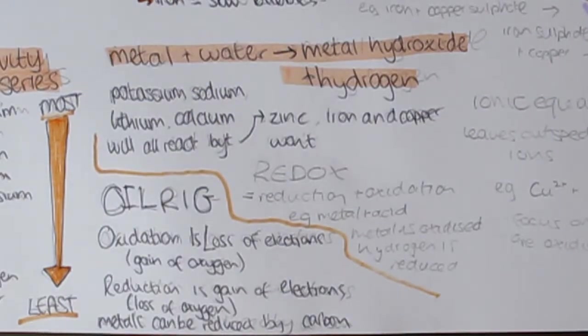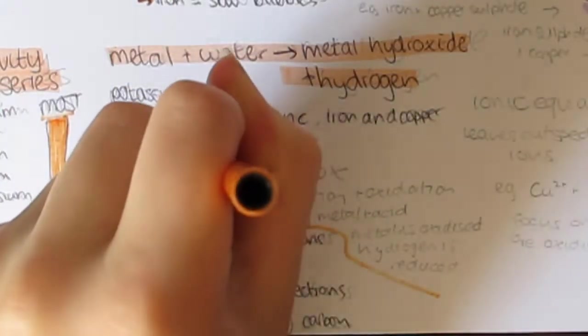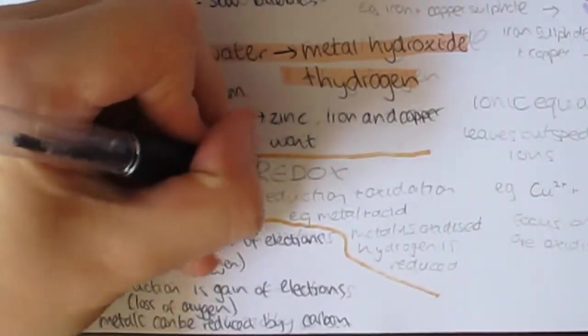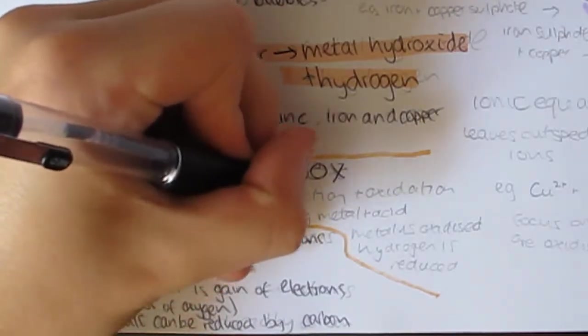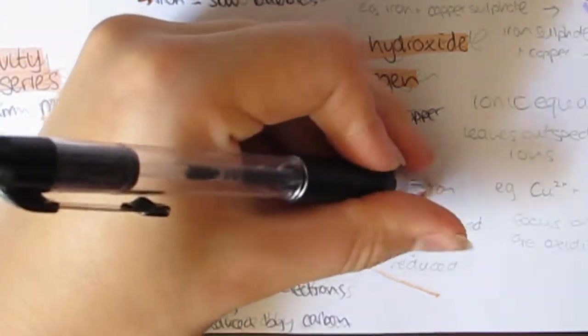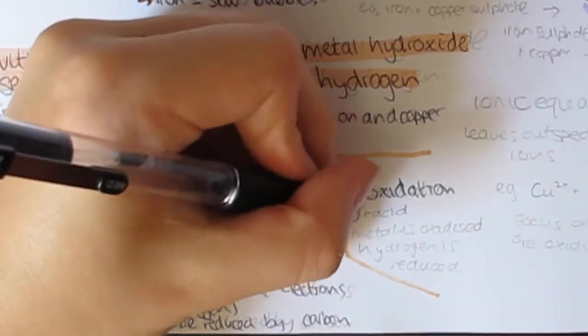Some metals are so unreactive that they don't form ores such as gold. Oxidation and reduction in terms of electrons are called redox reactions. The easiest way to remember this is by OIL RIG: oxidation is loss, reduction is gain of electrons.